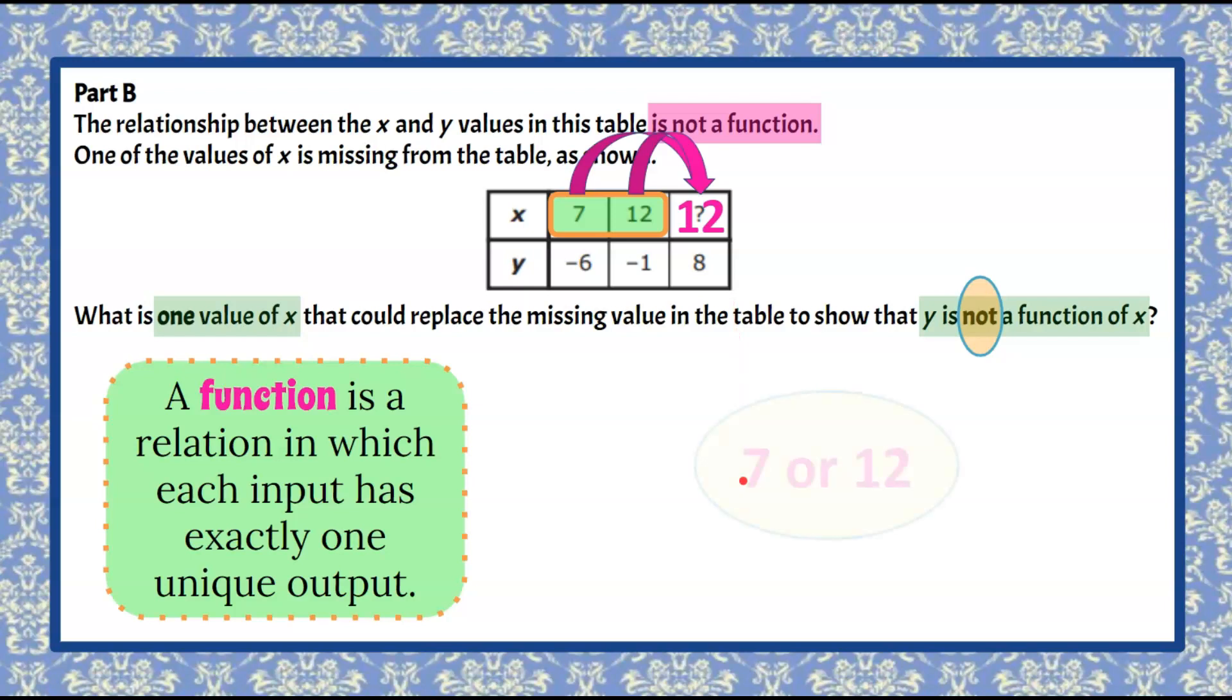So you could have answered 7 or you could have answered 12, and either answer would be correct, but they are the only two answers that would be accepted. Either 7 or 12 in this table would make this relation not a function.